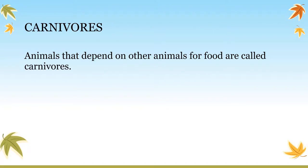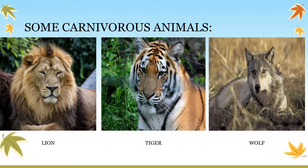Now let's discuss about carnivores. Carnivores are those animals that depend on other animals for food — that is, they mostly hunt other animals and eat their flesh. Some examples of carnivores are lion, tiger, and wolf. All these animals are carnivores as they hunt other animals and feed on their flesh. Because these animals eat meat only, they are called carnivore animals.